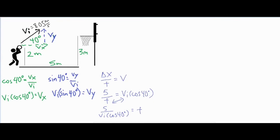For the second part of the problem, I'm going to solve for a few more values: time, the final velocity as the basketball goes through the hoop, and the angle. First, solving for time: I had a formula set up earlier, which is t = 5 / (vi·cosine of 40 degrees). With vi now known as 8.05 meters per second, my time comes out to 0.81 seconds.